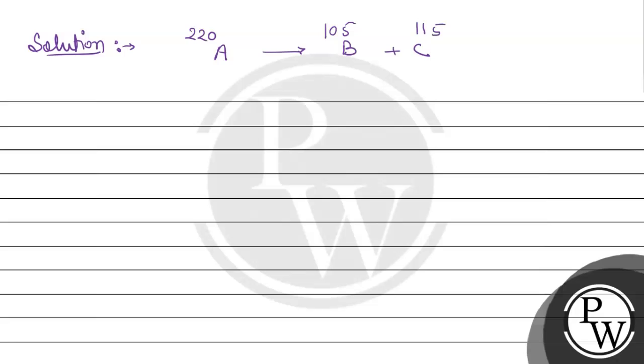Q value is equal to binding energy of B plus binding energy of C minus the binding energy of A. So the Q value can be calculated this way.